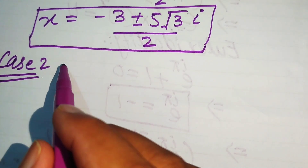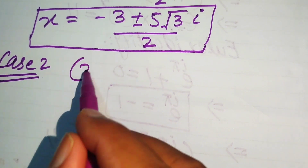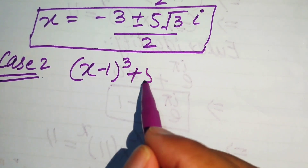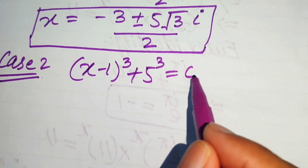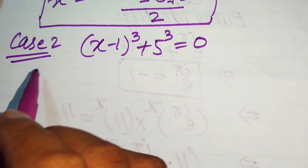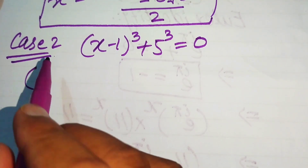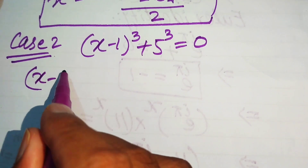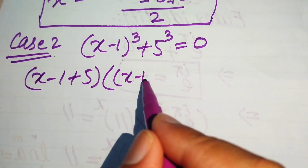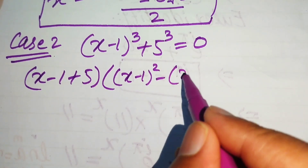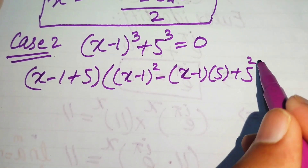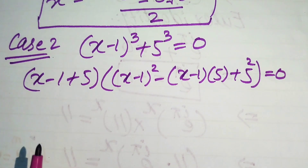We now move to Case 2: (x minus 1) cubed plus 5 cubed equals 0. Here we use the sum of cubes formula: a cubed plus b cubed equals (a plus b)(a squared minus ab plus b squared) equals 0, with a equals x minus 1 and b equals 5.